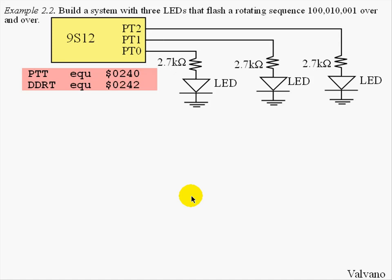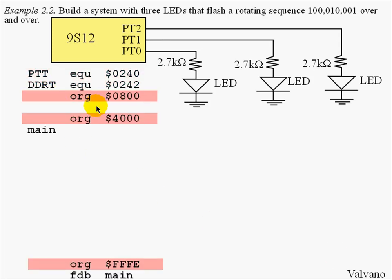The structure of our program will have a number of fundamental parts. The first part, shown in pink, is the definitions. We will use the EQU statement to define the terms PTT and DDRT to make our program more readable. Next we'll use the ORG statement to specify the three main memory components: the RAM memory which exists at 800, the ROM memory which starts at 4000, and the reset vector which is at location FFFE. ORG 800 allows us to define things in RAM, ORG 4000 places the program into ROM, and ORG FFFE allows us to set the reset vector.